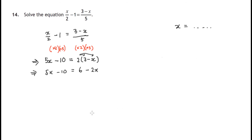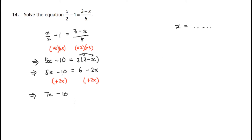Remember, when solving equations we're trying to end up with x on its own on one side, but we have x's on both sides. So let's take the action that gets rid of x on the right hand side. The opposite of taking away 2x is adding 2x, so I'll add 2x to both sides. On the left: 5x plus 2x gives 7x, and we still have that minus 10. On the right: adding 2x cancels the minus 2x, leaving just 6.